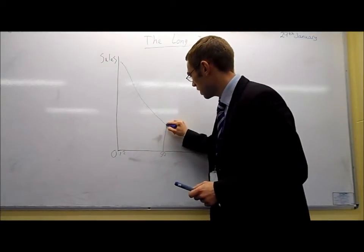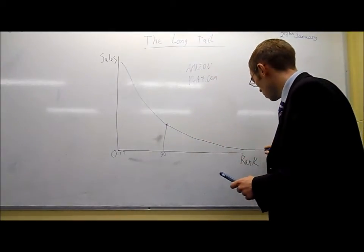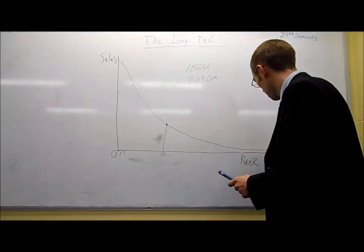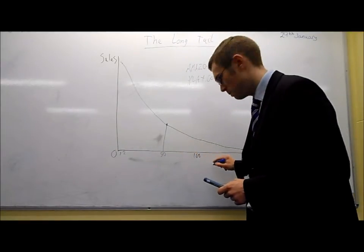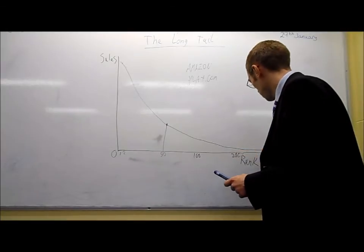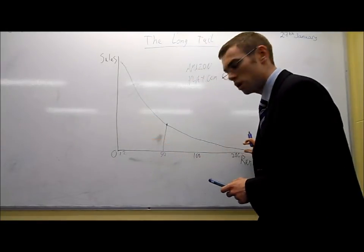What we can then do is take this line and move it along, and it carries it along almost indefinitely. And as rank decreases, number 100, number 200, number 300, of course sales decrease at the same time. But there are still sales.